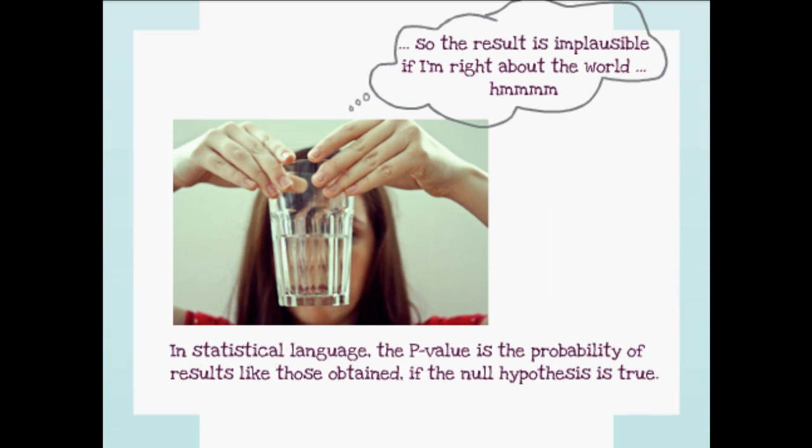Most often researchers are keen to find small p-values. At heart, they are optimists and want to challenge the pessimistic view.